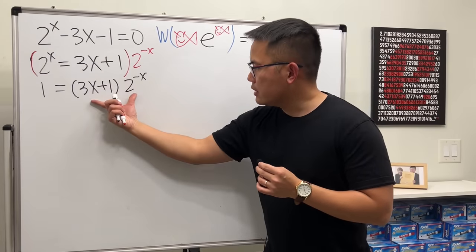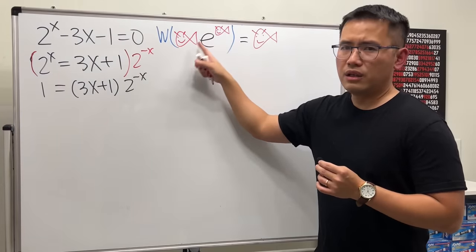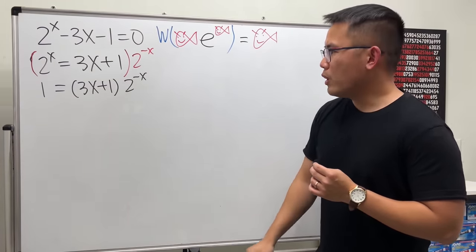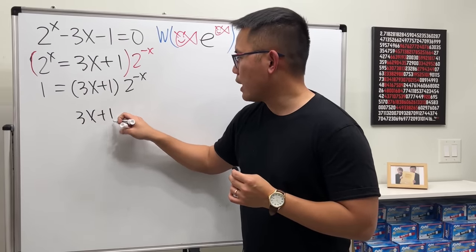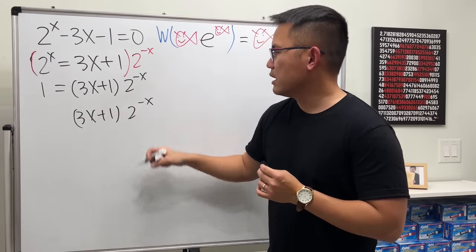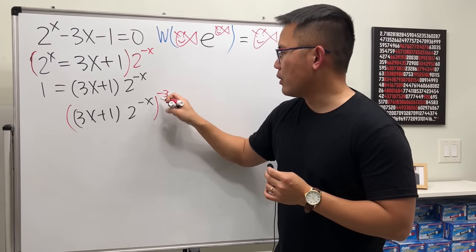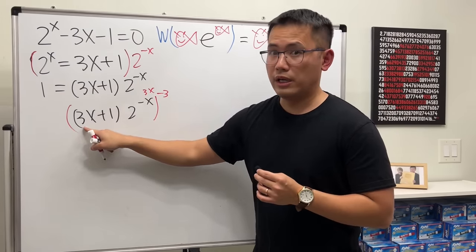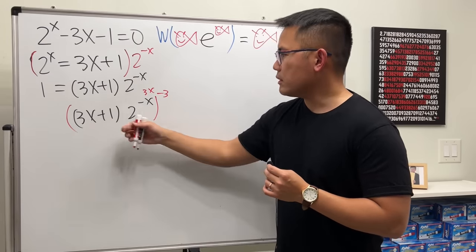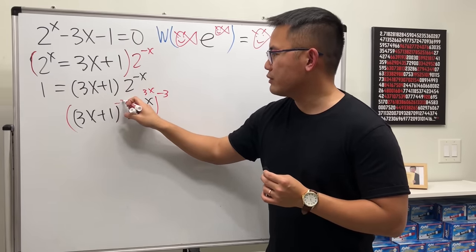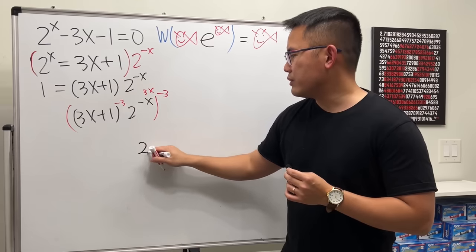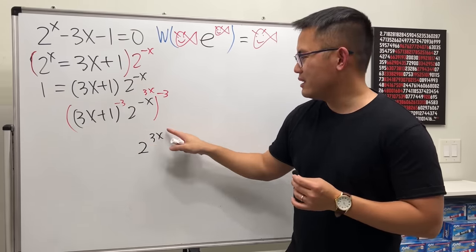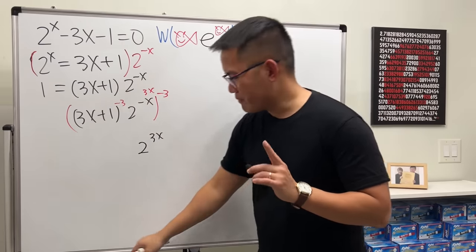Our goal is to get the 'fish' to be the same on both sides — meaning the part in the exponent and the coefficient should match. We have 3x + 1 and 2^(−x). You might think to raise both sides to the −3 power, since −x times −3 gives 3x, matching the 3x in front. But the problem is that then you'd also have a −3 on the other factor, giving 2^(3x), and there's no clean way to handle that. Don't do it that way.